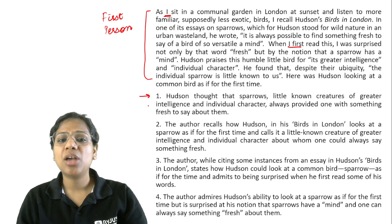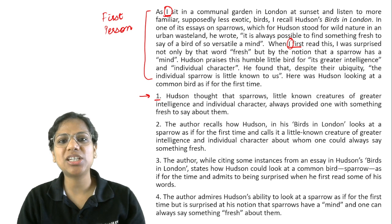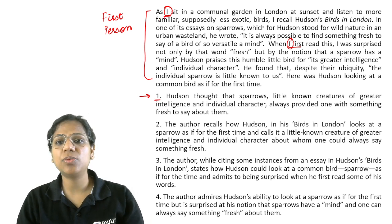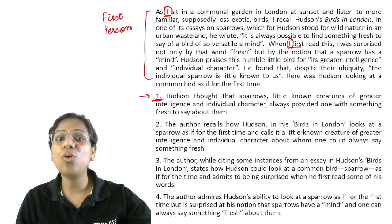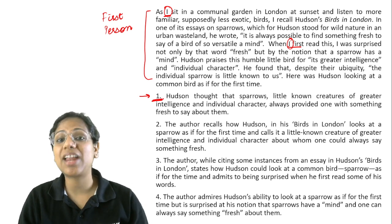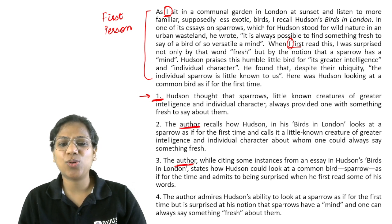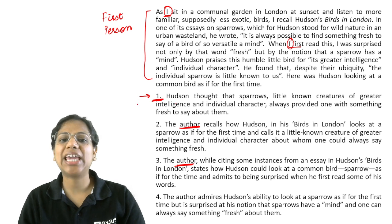When I first read this — so this paragraph talks about this person as well. It has been written by this person and the person mentions himself or herself. So in the summary also, we should capture that ideally. The paragraph is not just about Hudson — it is about how the author read Hudson, how the author felt about Hudson. So that's why Option 1 is incomplete as it does not feature the author at all. Eliminated.